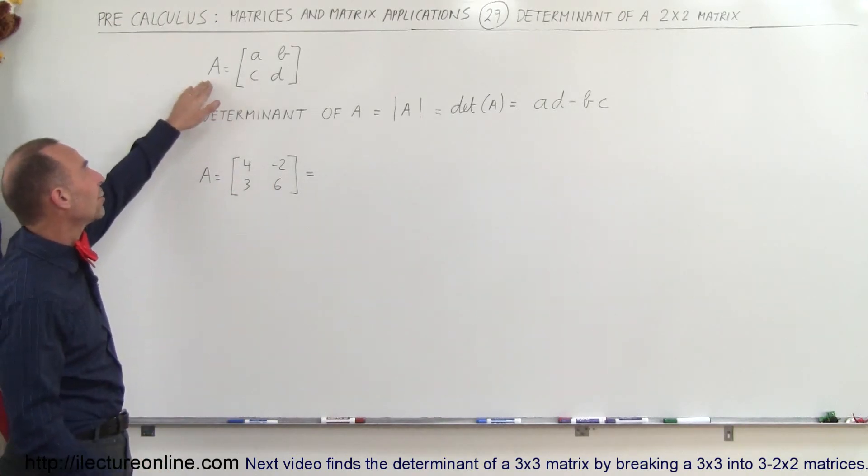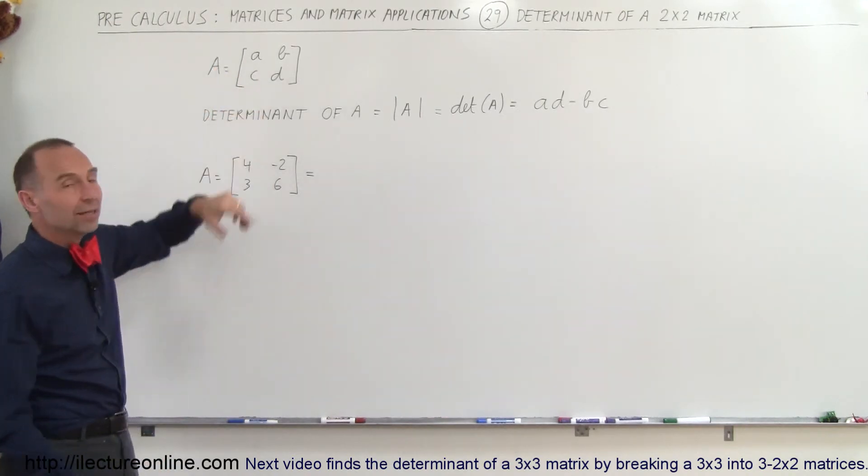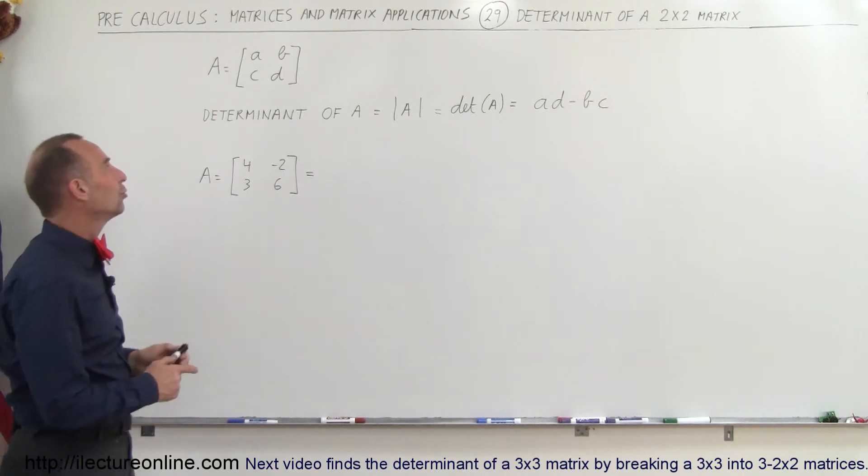So let's say we have matrix A, which has four elements: A, B, C, and D, because it has two rows and two columns.